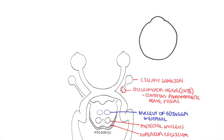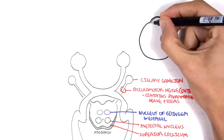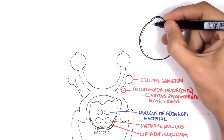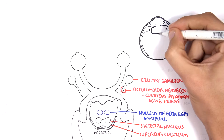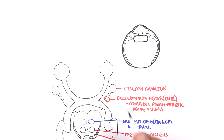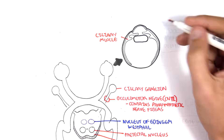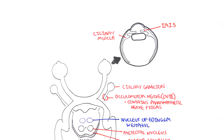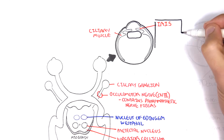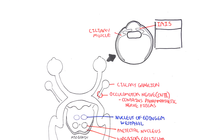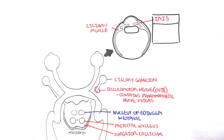Let's zoom into the eyeball and look at some important anatomical structures. Taking a cross-section of the right eyeball, we have the ciliary muscles, which are important because they change the shape of our lens and thus how much light comes into our eye. The iris is also very important — it is the color that makes up our eye, and it contains muscles that are responsible for how big or small our pupils are.